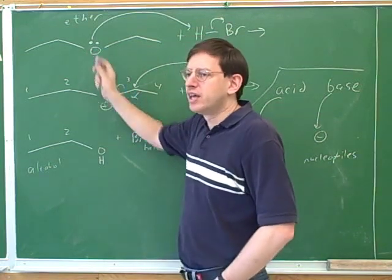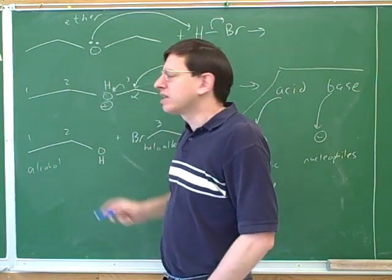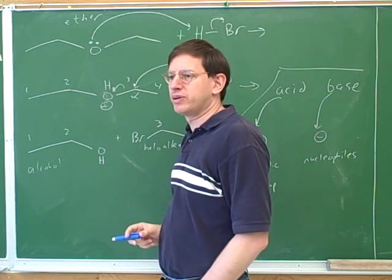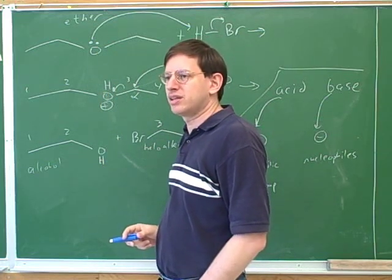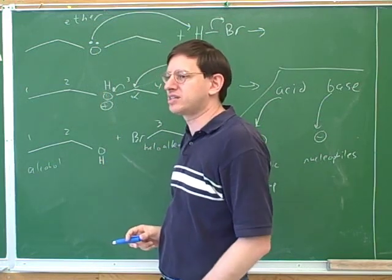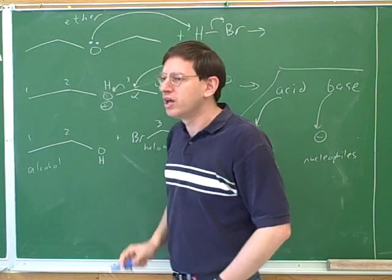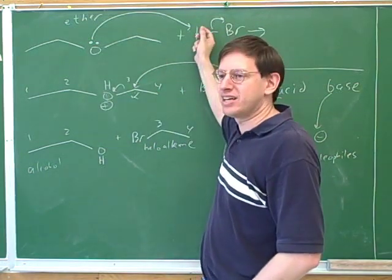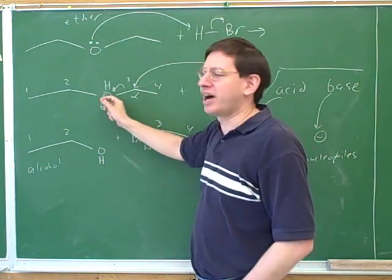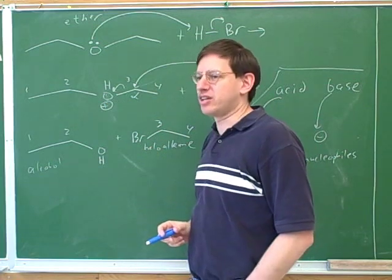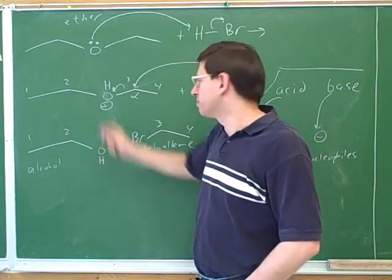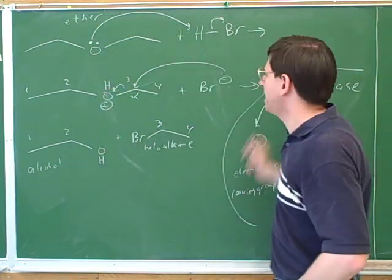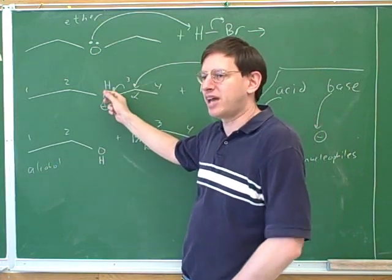Let's look at our original starting materials here. We started with this oxygen — a neutral oxygen. Is a neutral oxygen an acceptable leaving group? No. Neutral oxygen is not an acceptable leaving group. So what did we do to make it acceptable? We used an acid. That gave it the positive charge. Is a positive oxygen an acceptable leaving group? Absolutely.